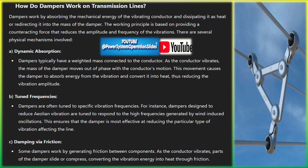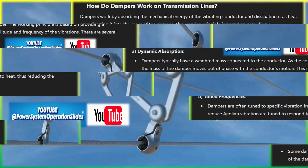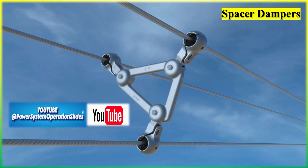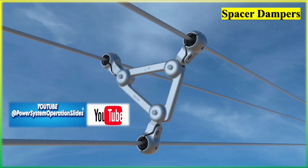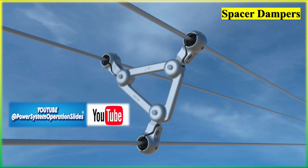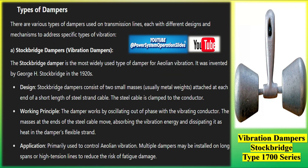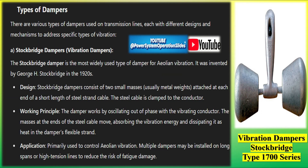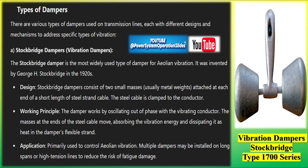The Stockbridge damper is the most widely used type of damper for Aeolian vibration. It was invented by George H. Stockbridge in the 1920s. Stockbridge dampers consist of two small masses — usually metal weights — attached at each end of a short length of steel strand cable, which is clamped to the conductor. The damper works by oscillating out of phase with the vibrating conductor; the masses at the ends of the steel cable move, absorbing the vibration energy and dissipating it as heat in the damper's flexible strand. Multiple dampers may be installed on long spans or high-tension lines to reduce the risk of fatigue damage.